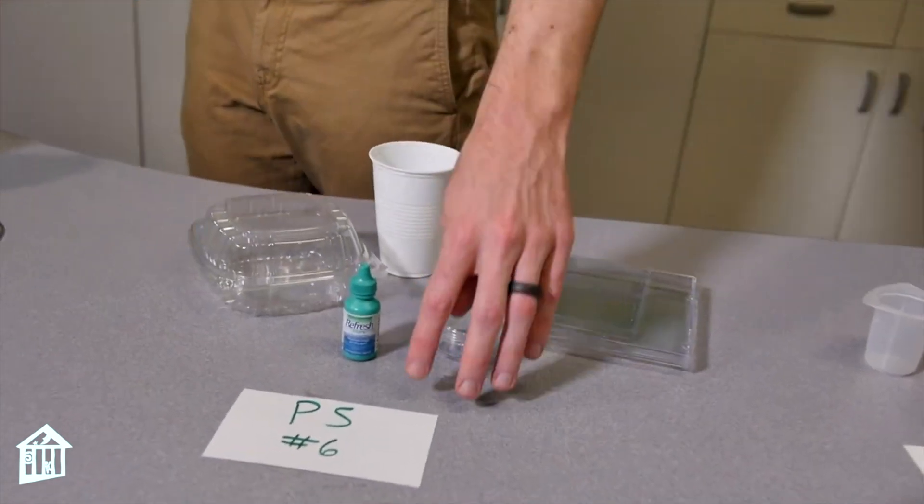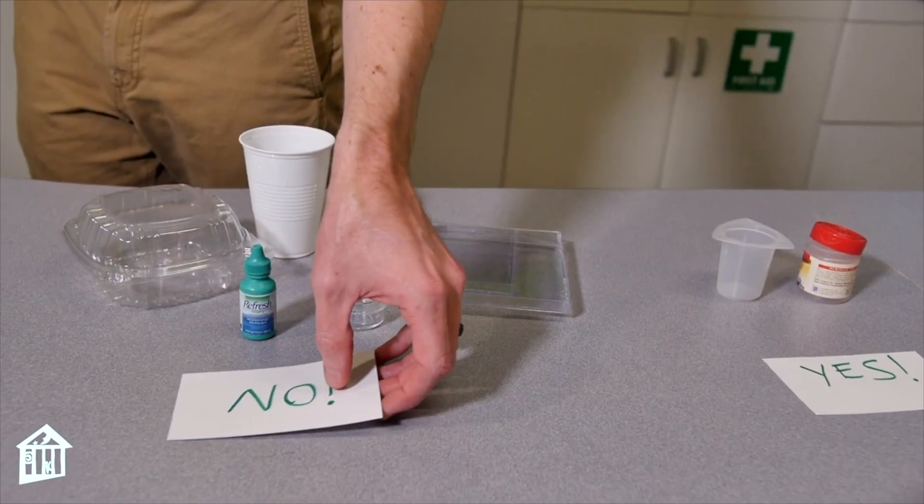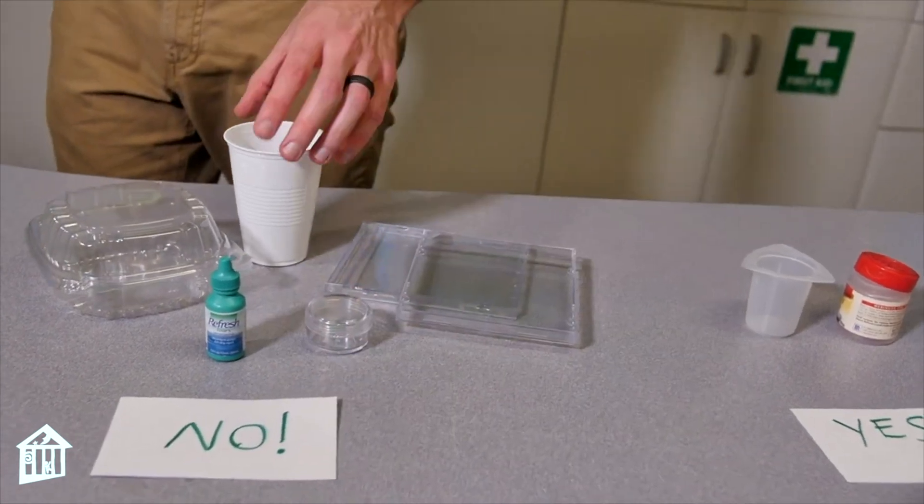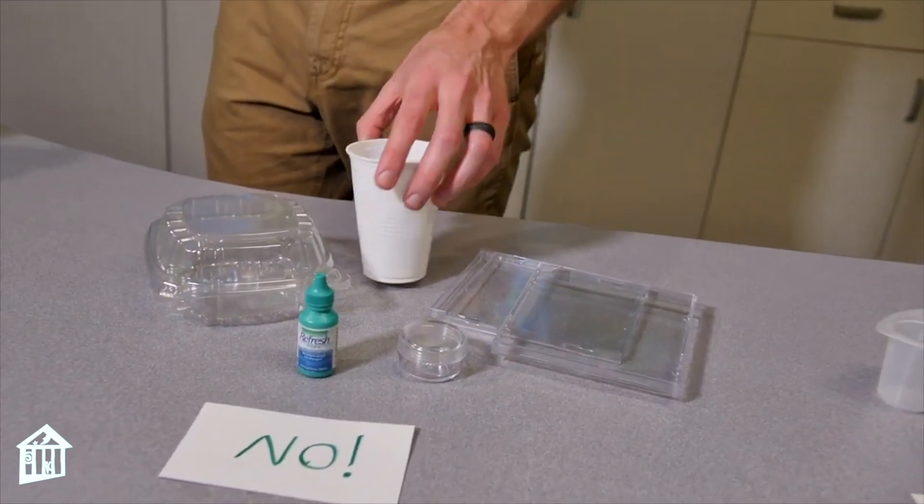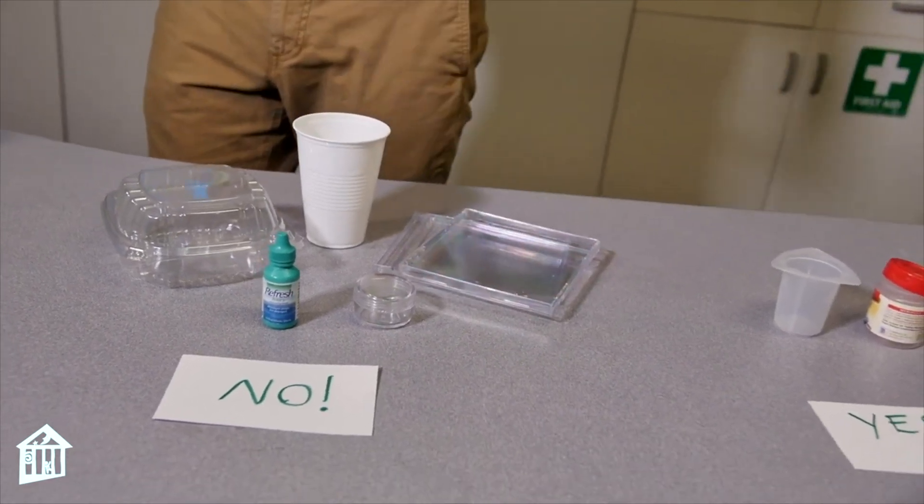For our number six plastic or polystyrene, it's not recyclable. So this includes disposable cups and plates, egg cartons, CD cases, and some bottles as well.